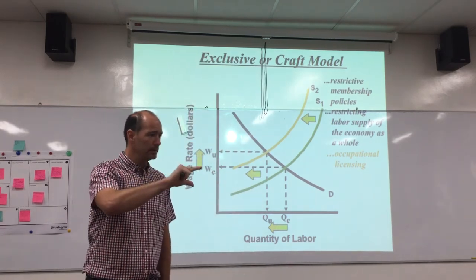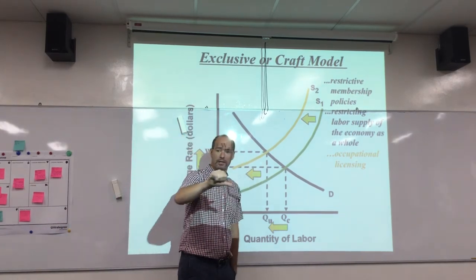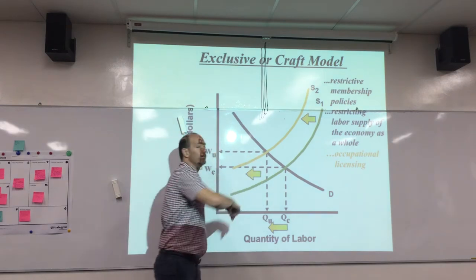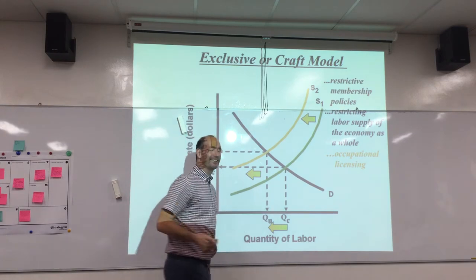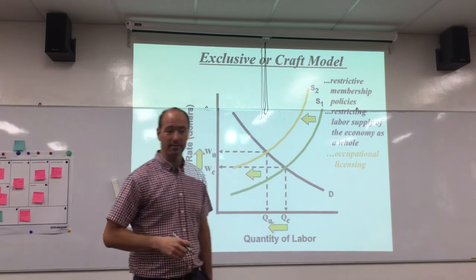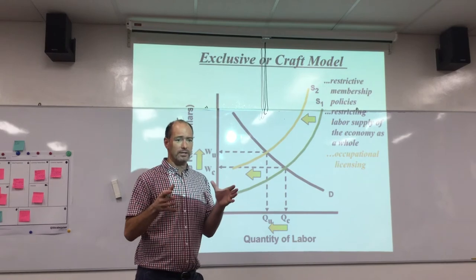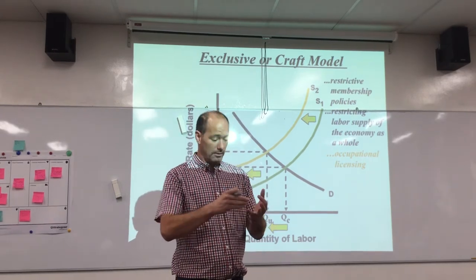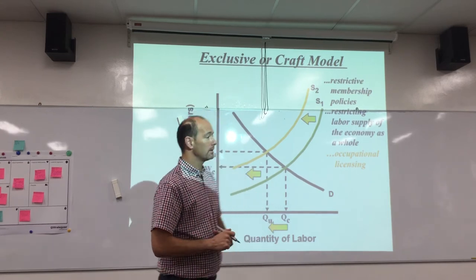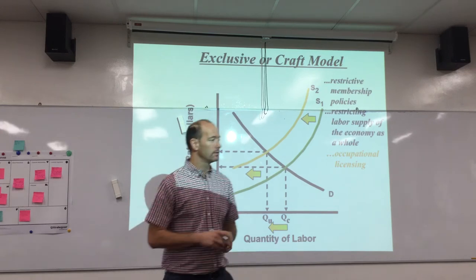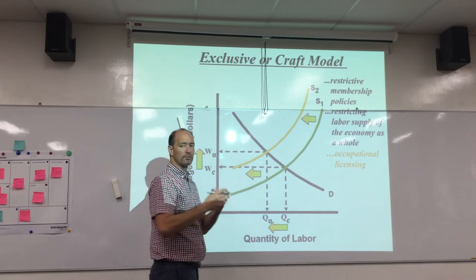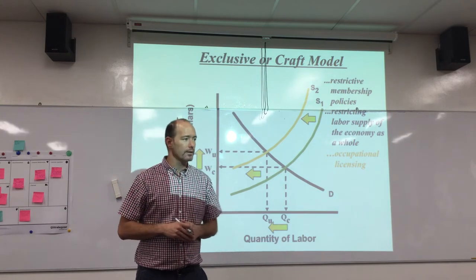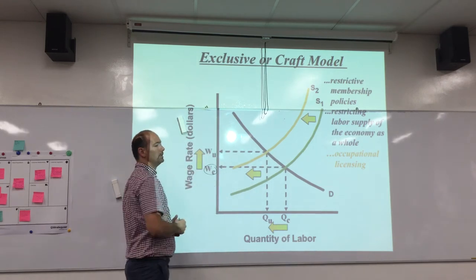If you want to be a lawyer, you have to pass the bar. For medicine, you have to pass all kinds of exams. For teaching, you have to get a certificate, an education, a degree, and pay money to learn about teaching. What that does in all three situations is restrict supply — some people can't pass the bar, can't afford to go to that many years of school, or can't afford to get the master's degree necessary for a teaching license. So it causes the supply of lawyers, doctors, and teachers to be restricted, causing wages to rise higher than they would in a competitive situation.